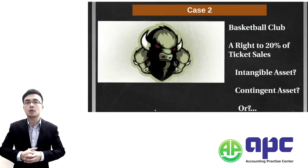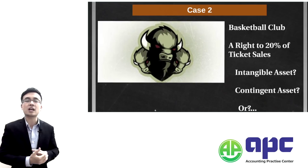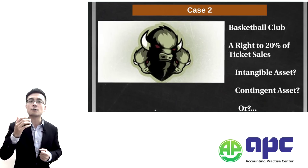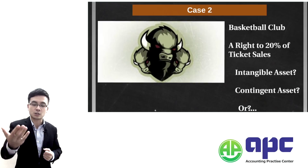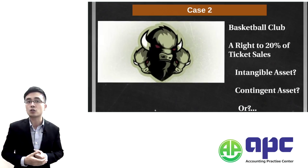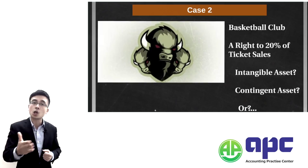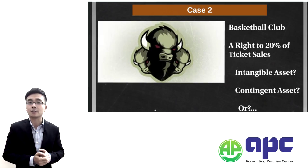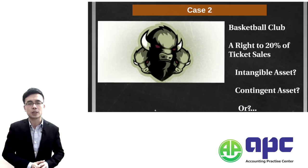For example, someone is suing you and your lawyer says perhaps you have a 40% chance of paying compensation. In that case you disclose the contingent liability in your accounts. That's associated with a court case normally.